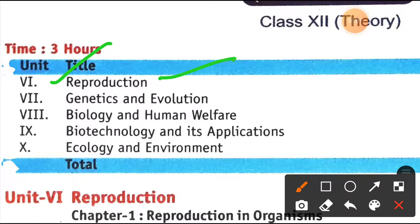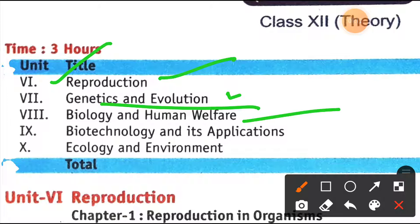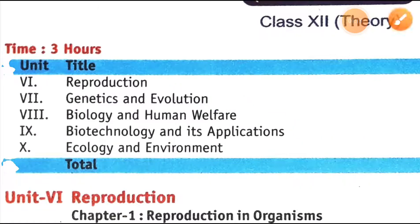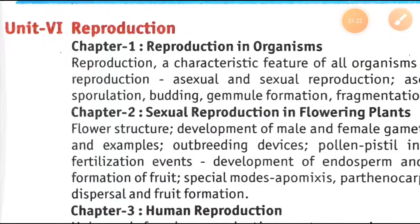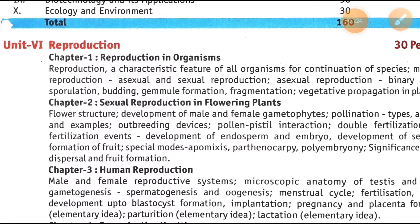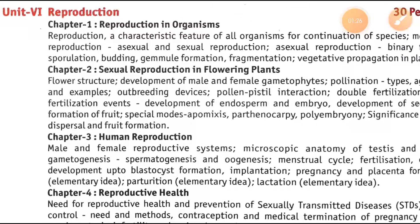The first unit is Reproduction. Then there is Genetics and Evolution, which is the most important unit. Next is Biology and Human Welfare, then Biotechnology and its Applications, then Ecology and Environment. So there are five units, with three to four chapters in each unit.